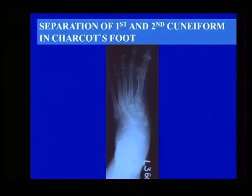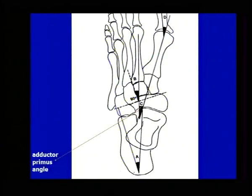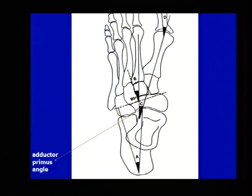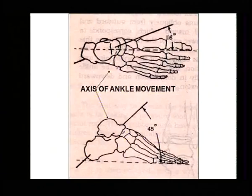If you just draw lines along the first and second metatarsal which intersect this cuboid-navicular line, this angle — known in podiatry as the angle of adductus primus — is normally 5 degrees. If you see this increasing, that's the earliest sign that this foot is likely to collapse unless you install some preventive strategies.